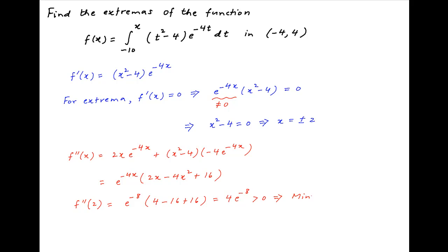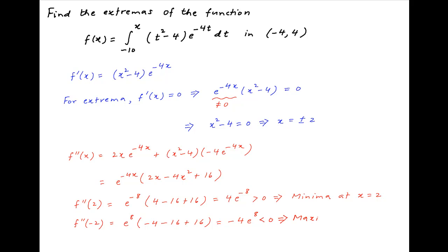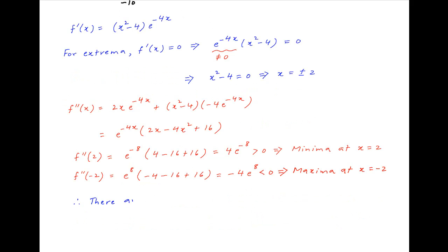Therefore, the function achieves a minima at x equal to plus 2. Similarly, the value of f''(x) at x equal to minus 2 is equal to e raised to the power of 8 times minus 4 minus 16 plus 16, which is equal to minus 4 times e raised to the power of 8, which is negative, which implies that the function achieves a maxima at the point x equal to minus 2.